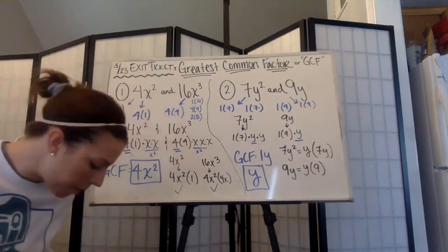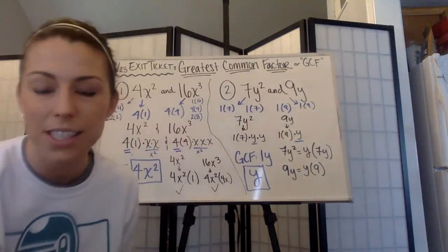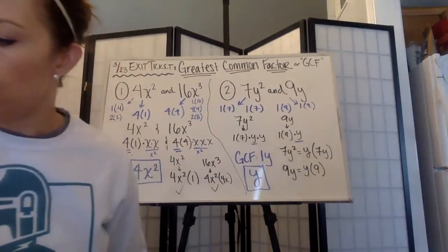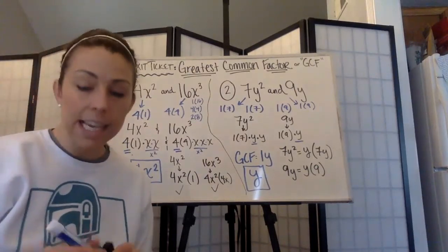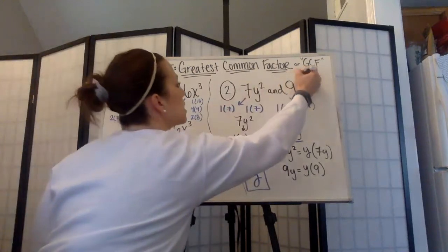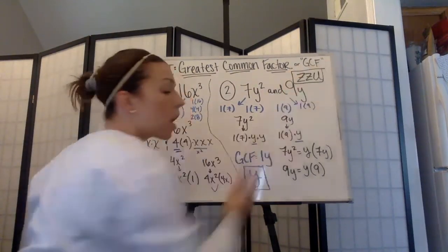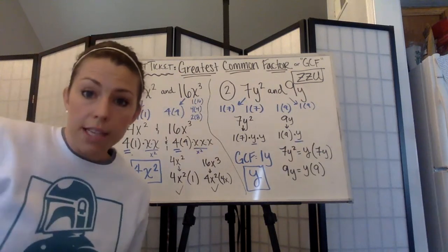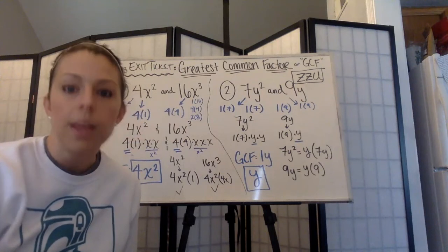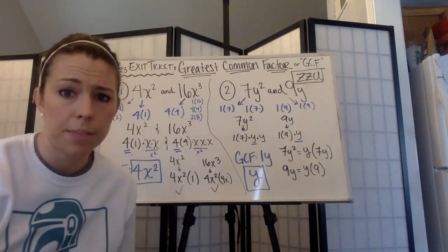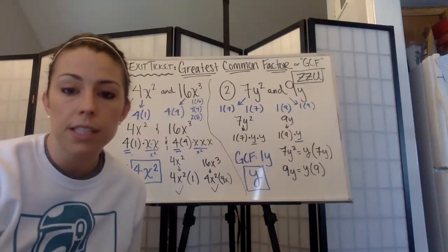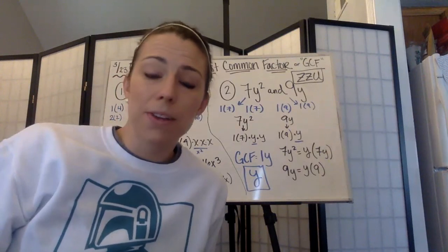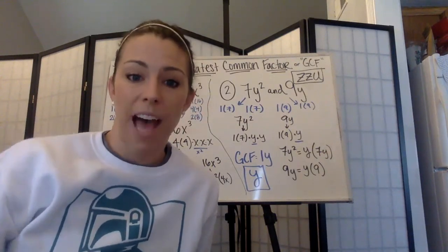Today's lesson was all about finding the greatest common factor of monomials. Your IXL code for today's practice is ZZU — it covers finding the greatest common factor of monomials. If you reach a problem you don't understand, try something, and if you get it wrong, look at the feedback to figure out your mistake. Email me with questions; this IXL code is due at the end of the week. Hope you all have a fantastic Monday — thinking about you, have a great day, bye!